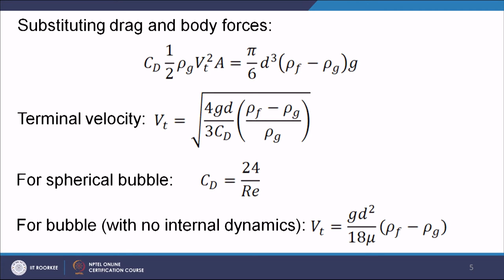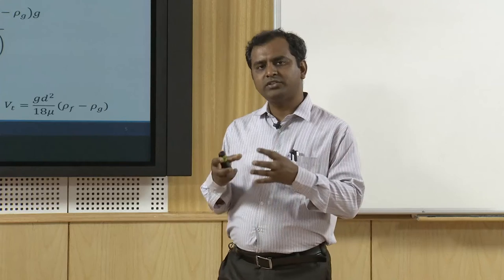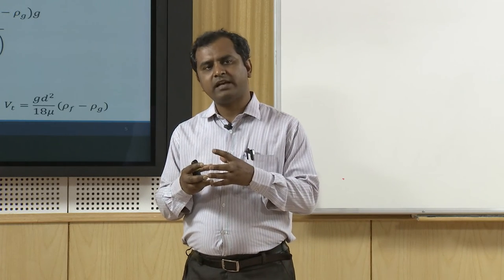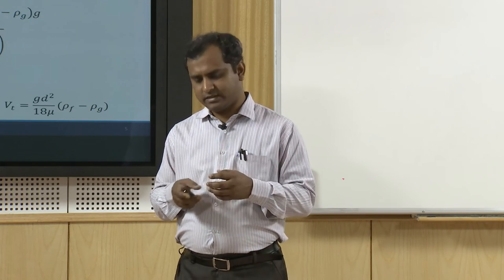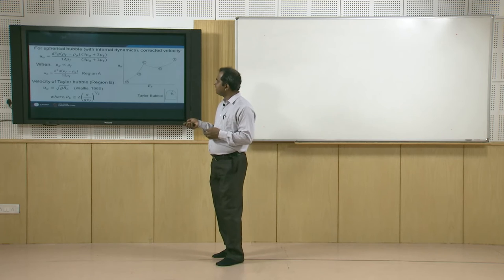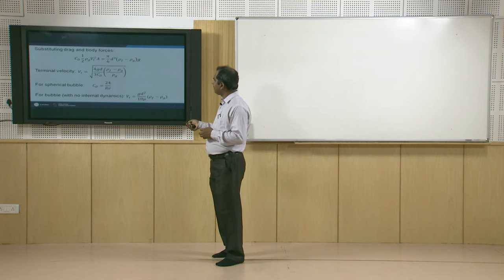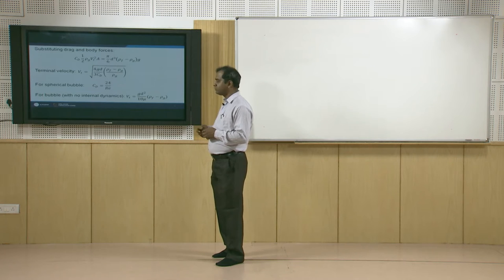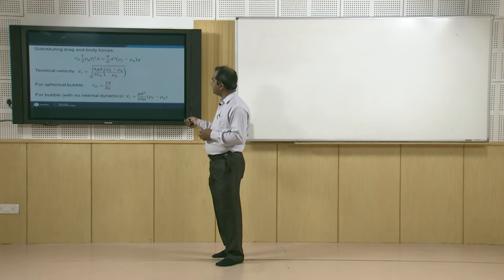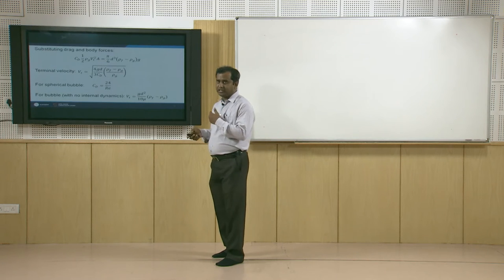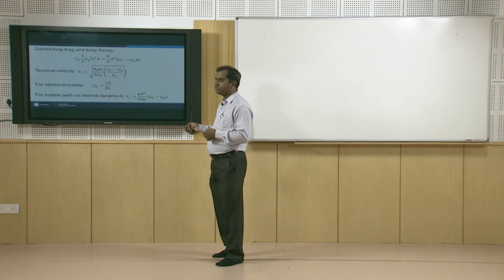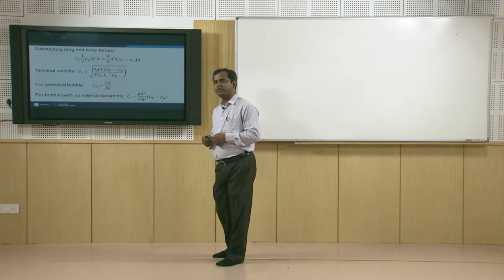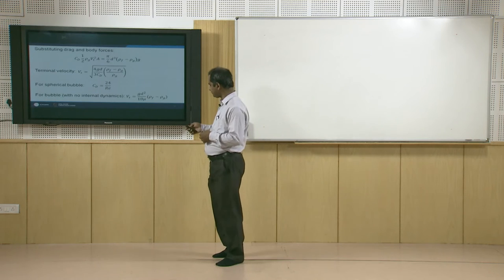In this derivation we have never considered internal dynamics of the gaseous mass — we assumed the bubble is a perfectly spherical gas mass with no internal circulation. Without considering any internal dynamics, terminal velocity is V_t = g d² (ρ_f − ρ_g) / (18μ). It is specifically dependent on gravitational acceleration, bubble diameter, and fluid viscosity — higher viscosity reduces terminal velocity.